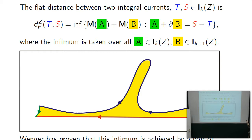A is an integral current of the same dimension; B is one dimension higher. The infimum is actually achieved. The huge difference between flat distance and Gromov-Hausdorff distance: the red and blue sets are very close in flat distance if the yellow connecting part is thin, whereas the Gromov-Hausdorff distance between them would be on the scale of the height. Flat distance says: I don't care about long thin splines.